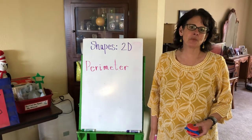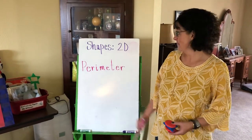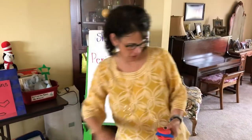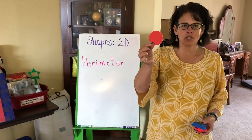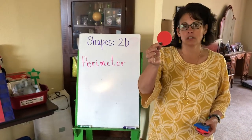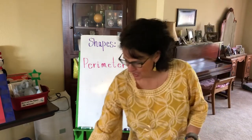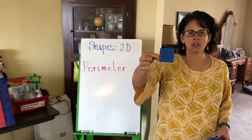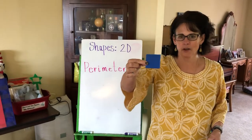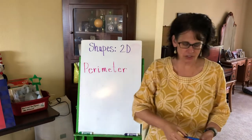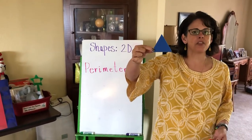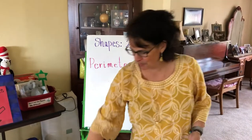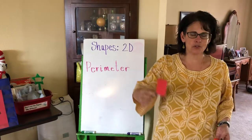Hi boys and girls, welcome back to math time! This week we've been learning about 2D shapes — two dimensional. We have named so far: a shape with zero sides and zero vertices, the circle; a shape with four equal sides and four equal vertices, the square; and a shape with three vertices and three sides, the triangle.